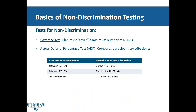Getting into the specifics of how the non-discrimination tests work — there are several of them. The first is the coverage test: a plan must cover a minimum number or percentage of non-highly compensated employees. The second and probably the most common one we get questions on is the actual deferral percentage test, referred to as the ADP test. This takes into account how much employees are putting into the plan compared to the highly compensated employees. In this chart, if the NHCE average rate is between zero and two percent — for example, if the average of the rank and file is one and a half percent — we multiply that by two, so the HCE average can be three percent.